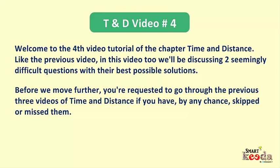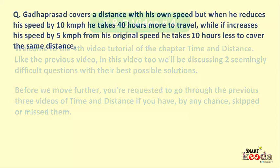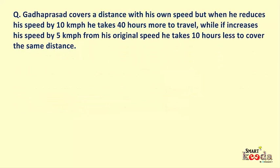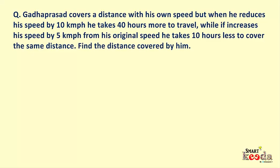Let's now move forward and take the first question, the language of which goes like: Gadha Prasad covers a distance with his own speed, but when he reduces his speed by 10 km per hour he takes 40 hours more to travel, while if he increases his speed by 5 km per hour from his original speed he takes 10 hours less to cover the same distance. Find the distance covered by him.